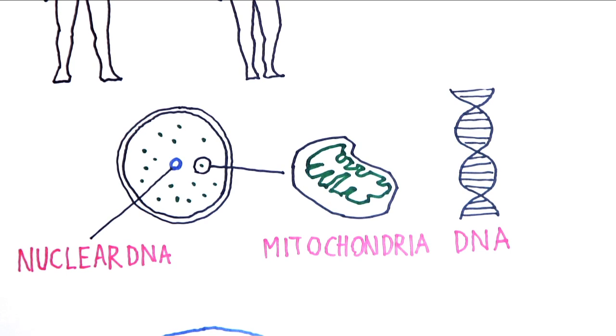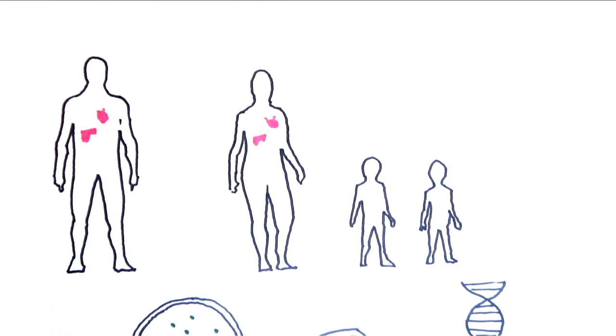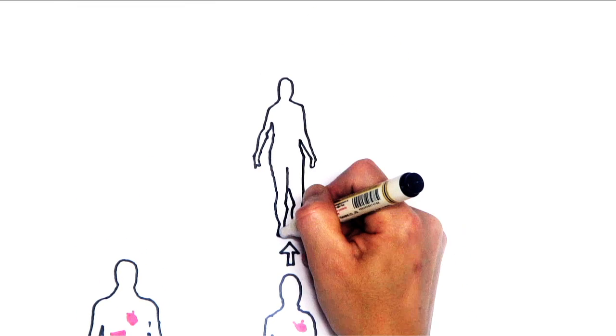Mitochondrial DNA, however, is passed down through your mother's side only and so is shared with your siblings and those further up your maternal line.